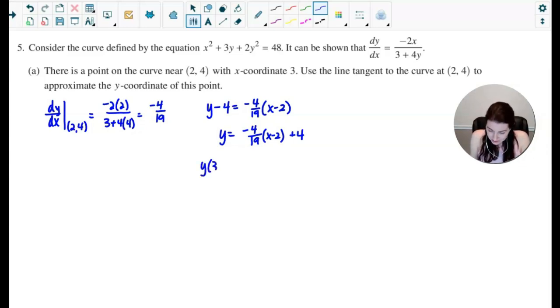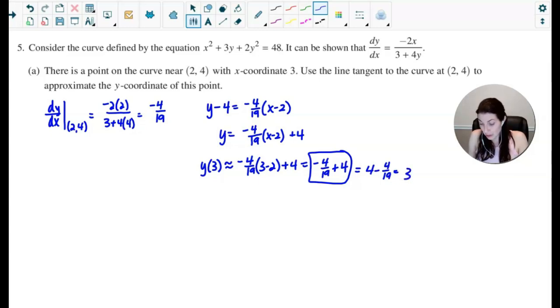Now I want to approximate the y-coordinate at the point that has an x-coordinate of 3. So now I want to approximate what y of 3 is. And so that would be negative 4 over 19 times 3 minus 2. That's nice because that'll just be 1. So then I have negative 4 over 19 plus 4. And remember, the great thing about an FRQ is you don't have to fully simplify. So if it were me, I would actually go ahead and just leave it like that. You could think about this being 4 minus 4 over 19, so I could write it as like 3 and 15 over 19, but that would be as far as I would go. I'd probably just leave it as negative 4 over 19 plus 4.